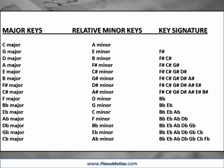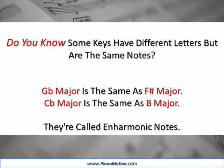Here is a chart showing major keys, relative minor keys, and key signatures. Some keys have different letters but are the same notes. G flat major is the same as F sharp major. C flat major is the same as B major. They're called enharmonic notes.